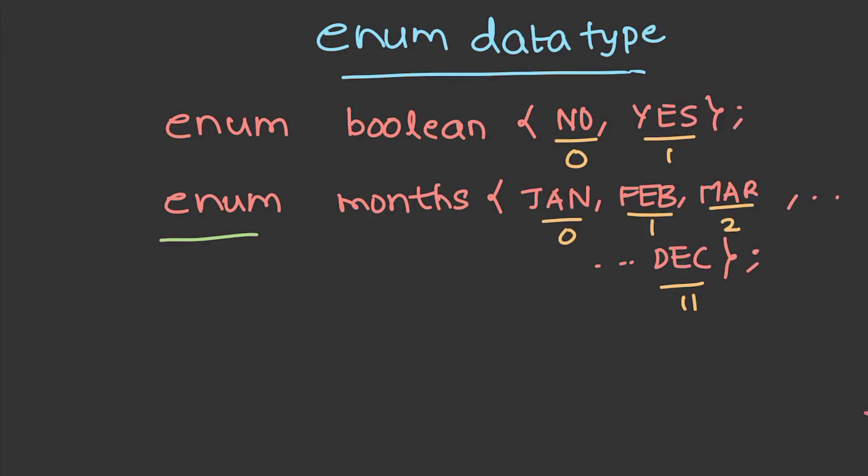Now I want to discuss a data type which people tend to ignore generally which is very easy and will not take much of your time. Just try to understand this. If we consider an enum data type, it is used to enhance the readability of our code. Suppose for example, let us consider the enum, this is the keyword and this is the identifier. This is the name.